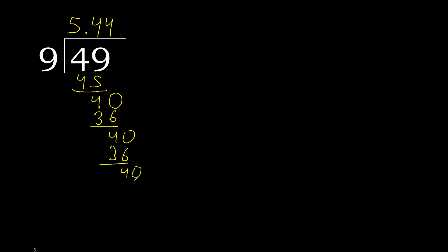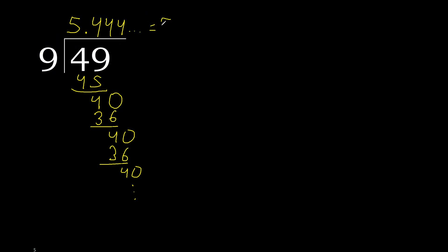Here it repeats, therefore repeat. It folds and repeats. So 49 divided by 9 is here — after the point it folds and repeats. Therefore, like this, like this, or like this.